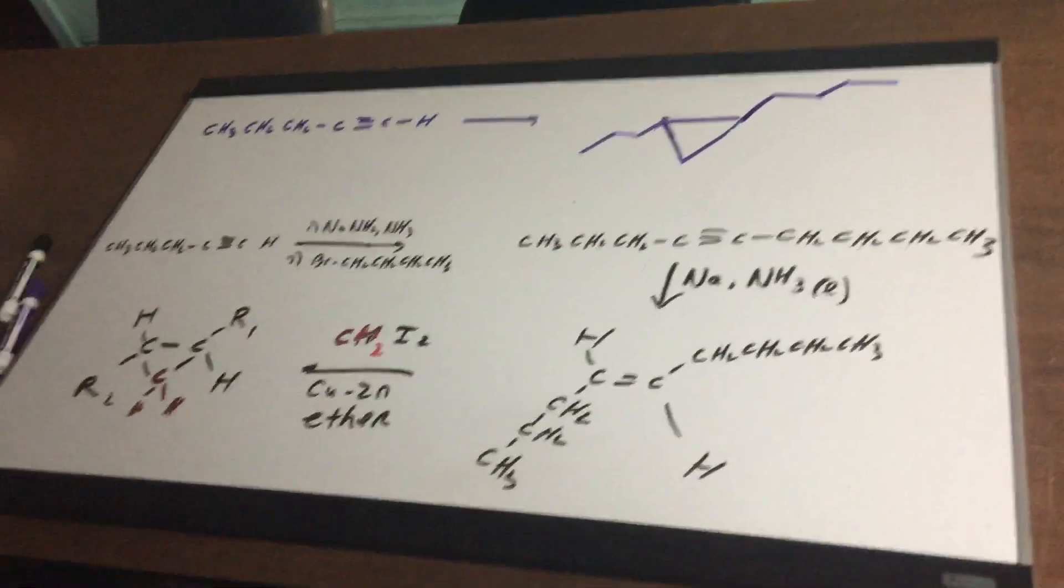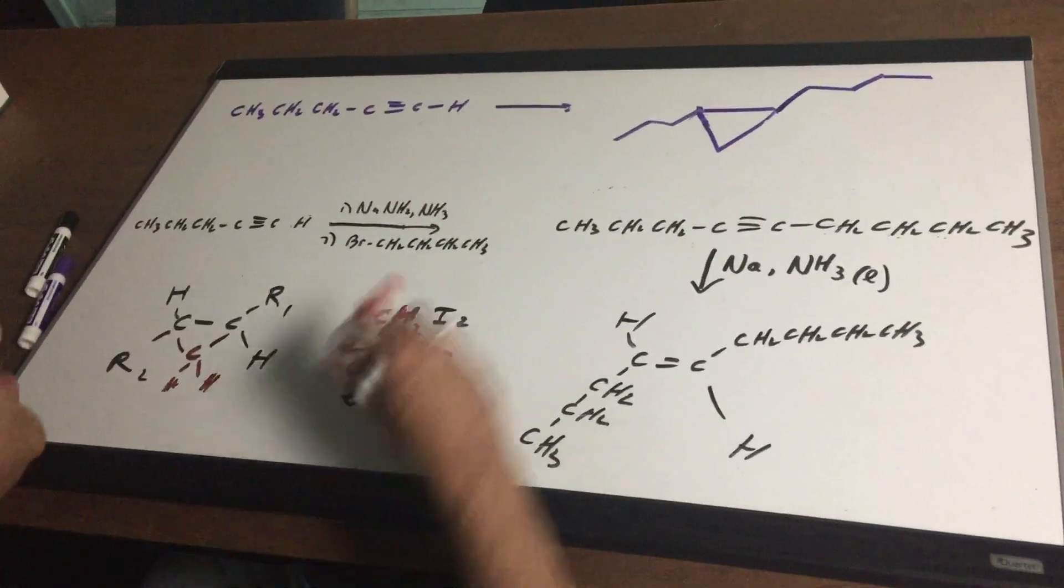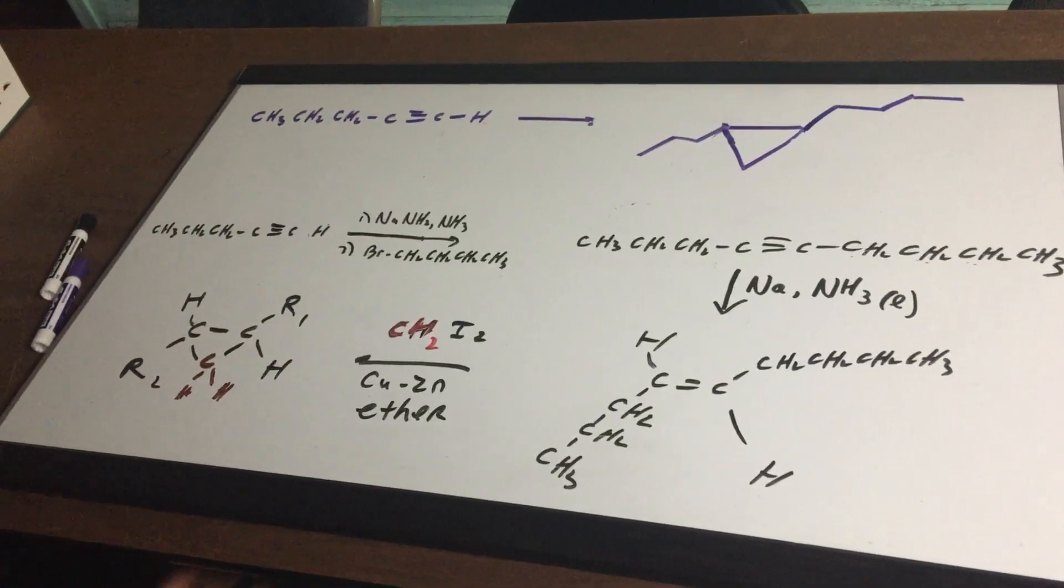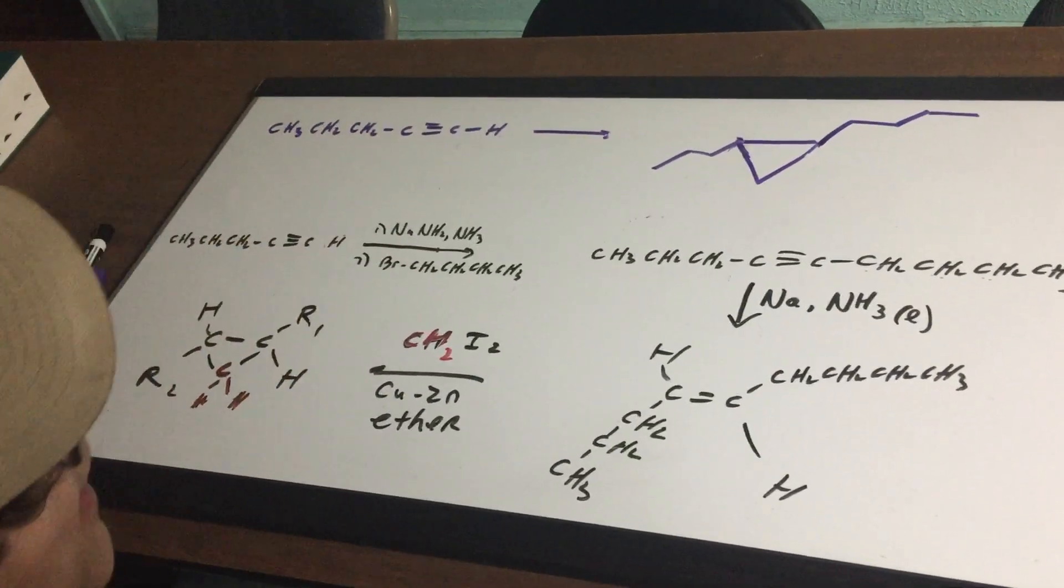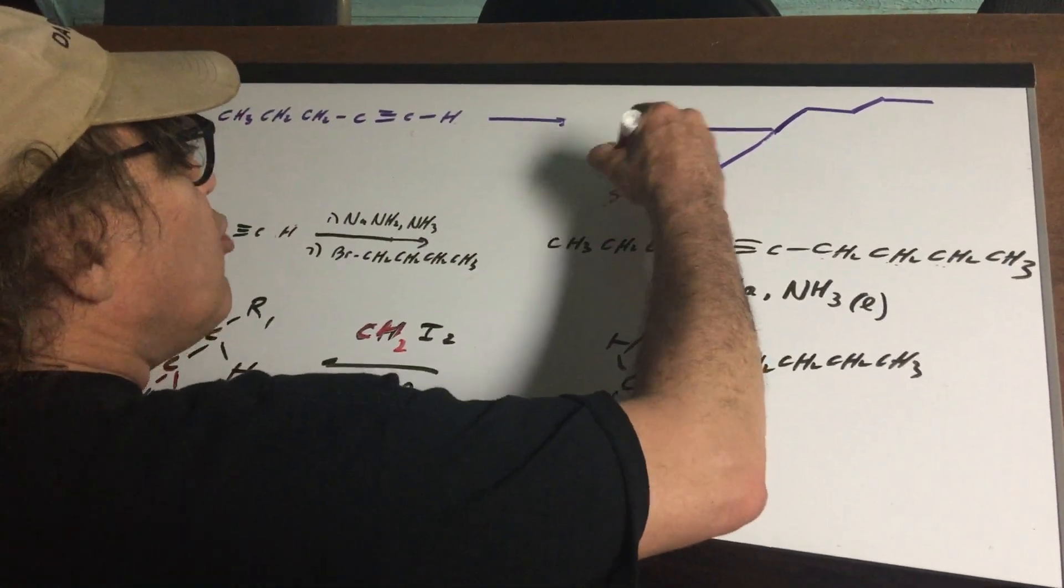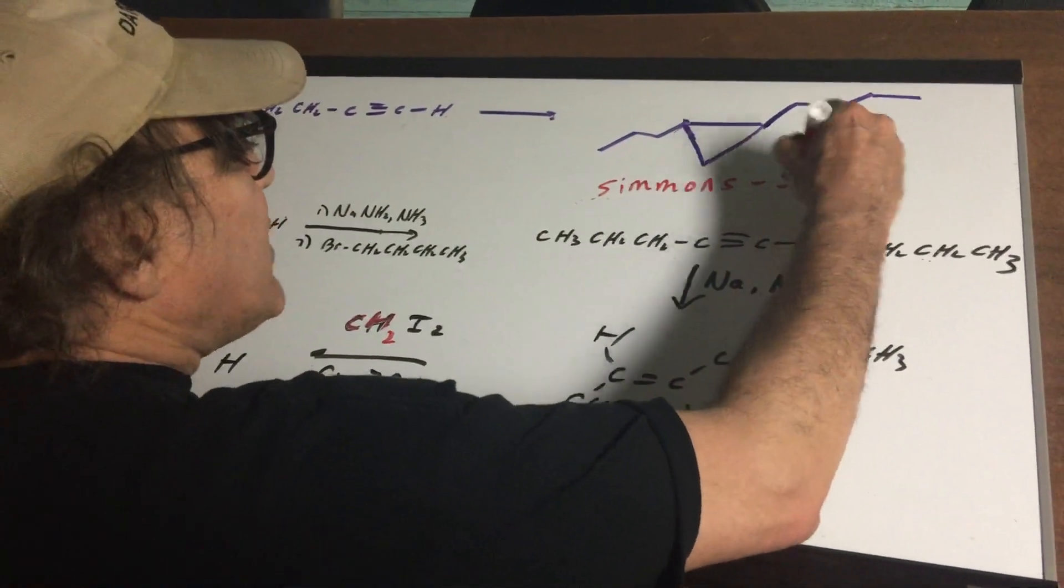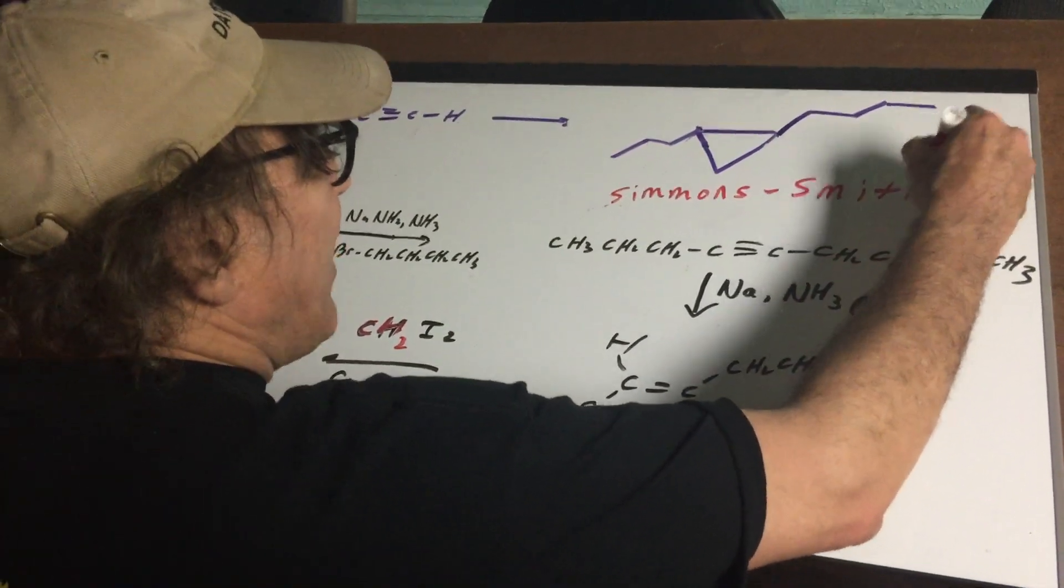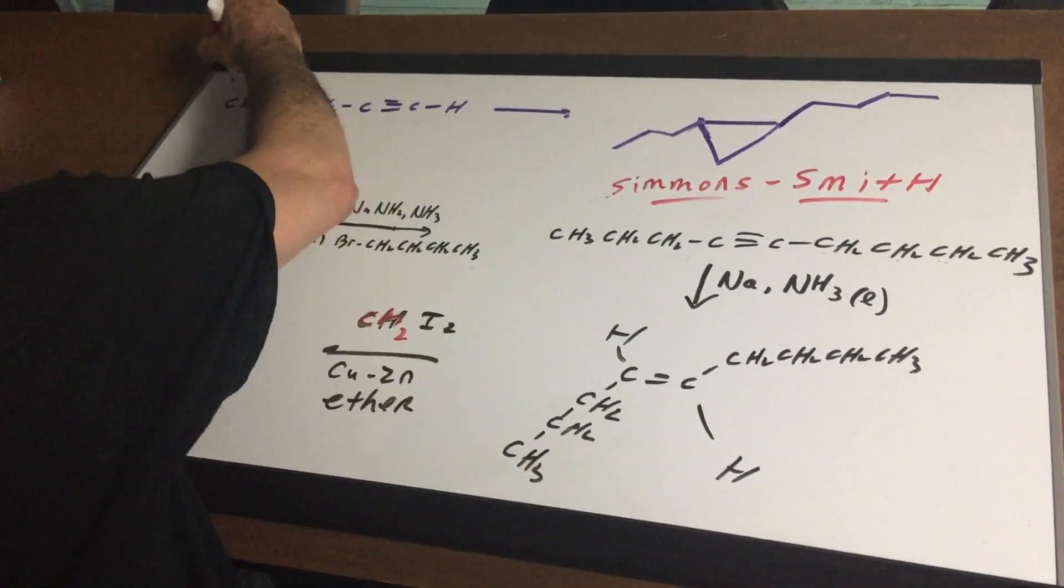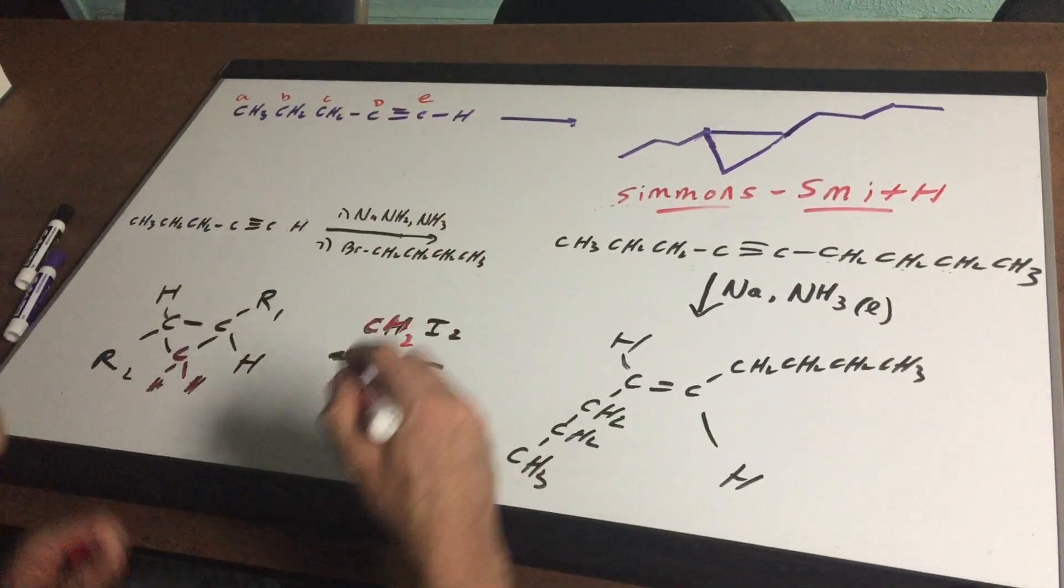What I want to do is I want to go from this alkyne which is called one pentine and I want to make this ring which is a substituted cyclopropane ring. The minute you see you want to make a cyclopropane you should think of a very famous reaction known as the Simmons-Smith reaction and what I'm going to do is first label these carbons just so we can keep track. A, B, C, D, E.